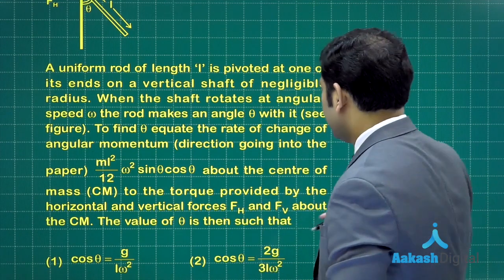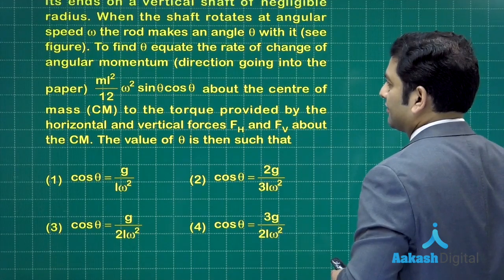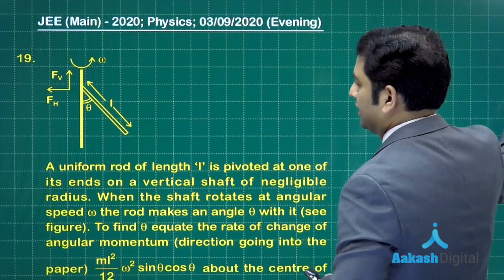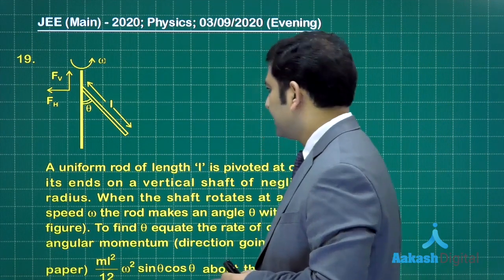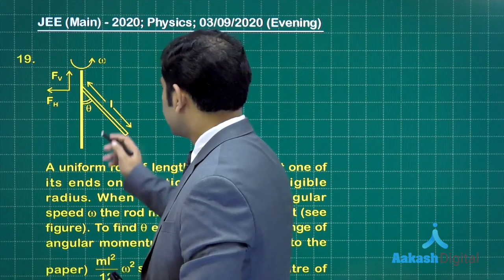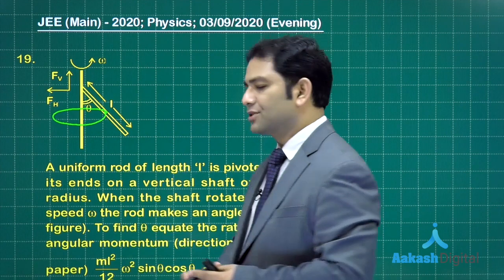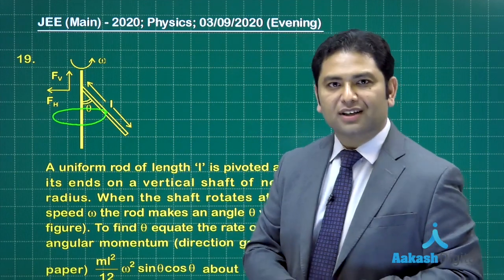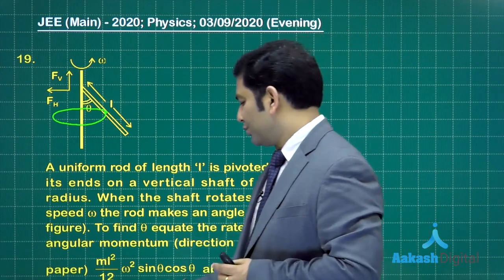Where do we begin? We need to begin from the free body diagram. First realize this particular center of mass is moving in a circular motion of radius L by 2 sin theta.